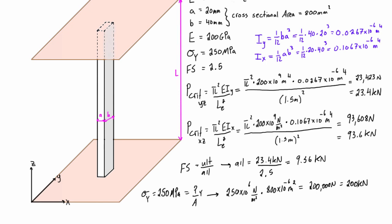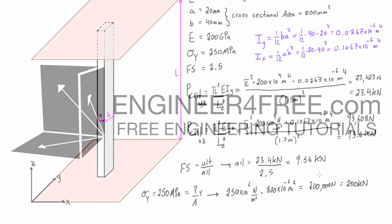Basically this material will yield when we apply 200 kilonewtons to this exact column. And that's way more than if we applied only 23.4 and it's going to buckle. So it's safe to say that this column will buckle in the YZ direction or plane before it even buckles in the XZ plane and before it yields due to compression.